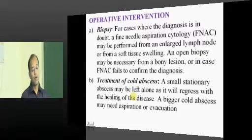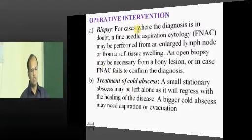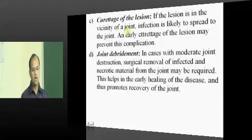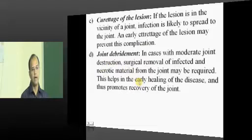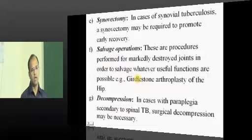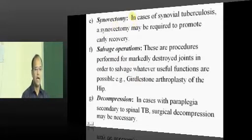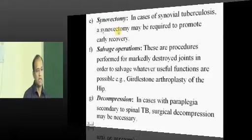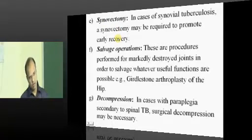Now, what are all the operative interventions done in tuberculosis? First, you do a biopsy to diagnose. Second is cold abscess drainage. Third is curettage of the lesion to get rid of it. Fourth is debridement of a joint — take out all the necrosis from the joint.